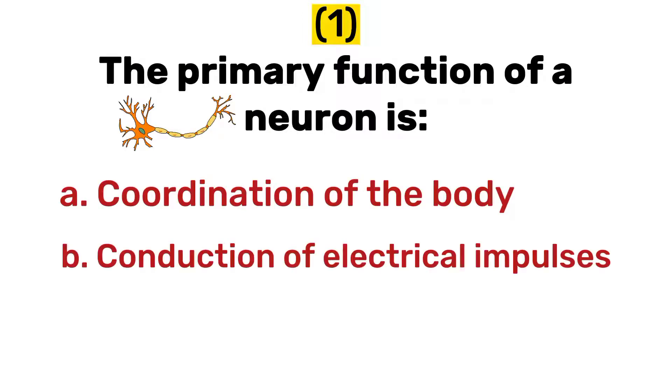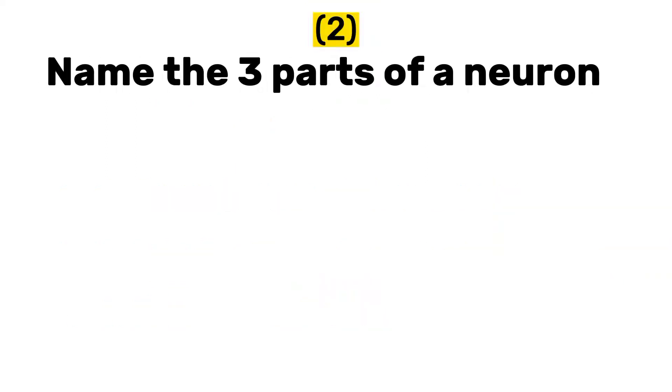The answer is B, conduction of electrical impulses. Number two: name the three parts of a neuron.